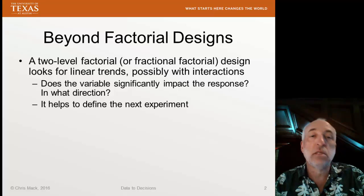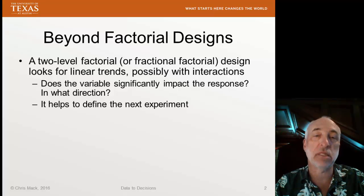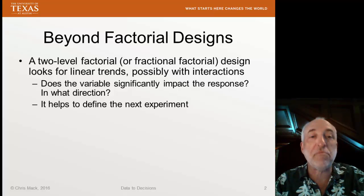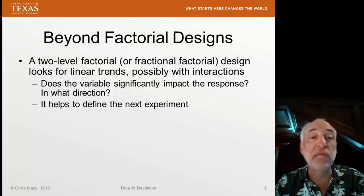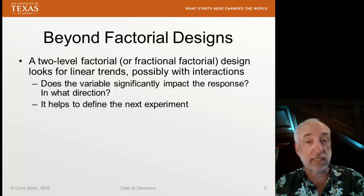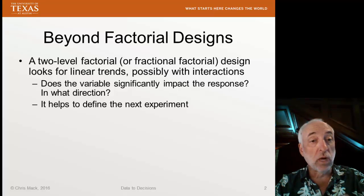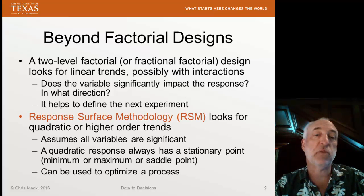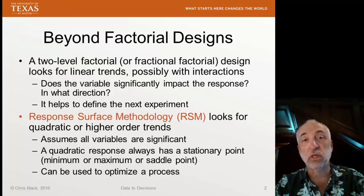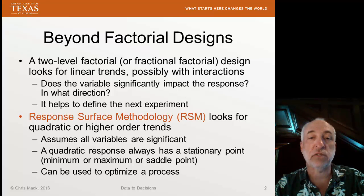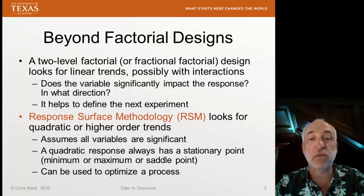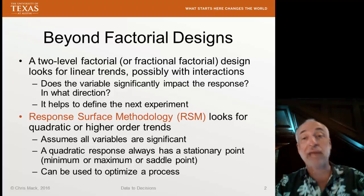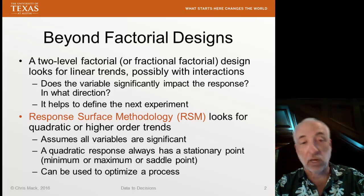We're basically asking simple questions like: does this variable significantly impact the response? And if so, in what direction does it move, and what kind of overall magnitude of change do we get? Often, we use the two-level factorial to help us define the next experiment. In response surface modeling or response surface methodology, we look for higher-order trends — in particular, quadratic trends. Those are the most common. Here, we've hopefully already done a screening experiment and figured out which variables are significant, and then we can add more data to do a second-order model.